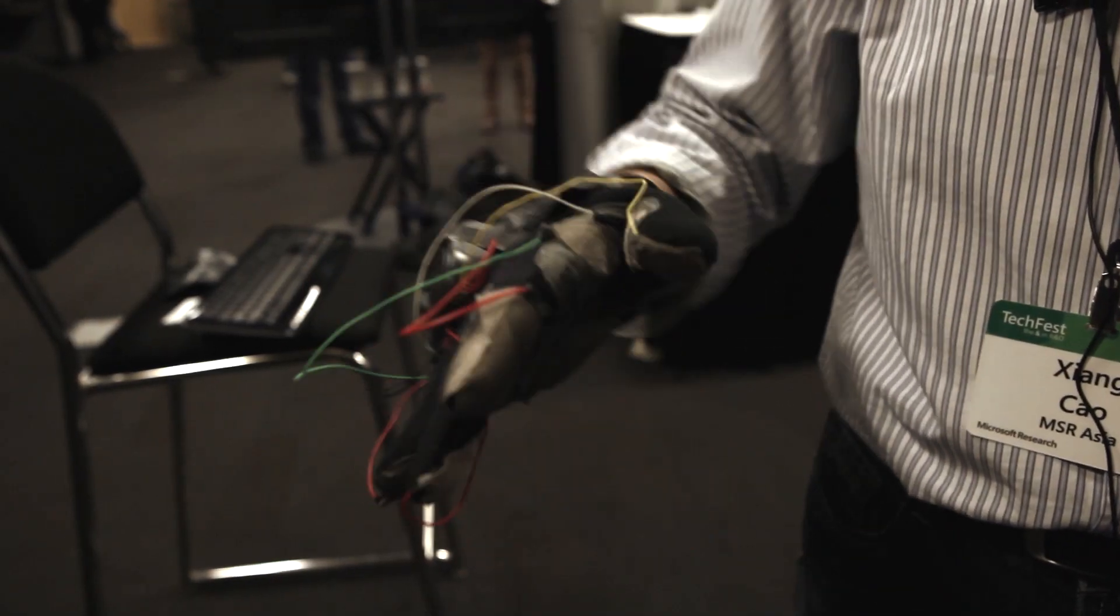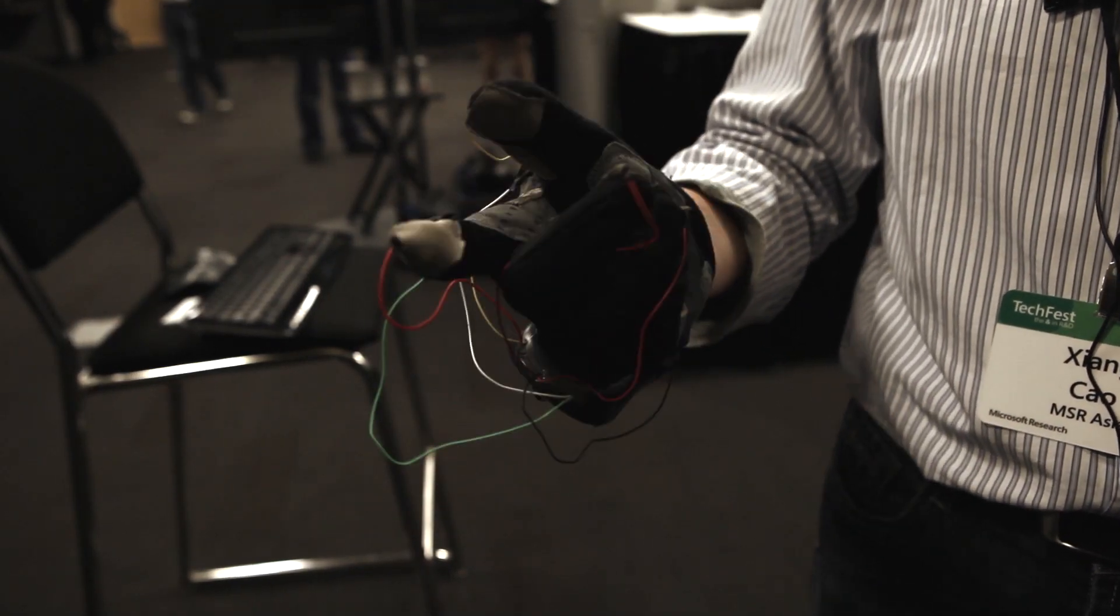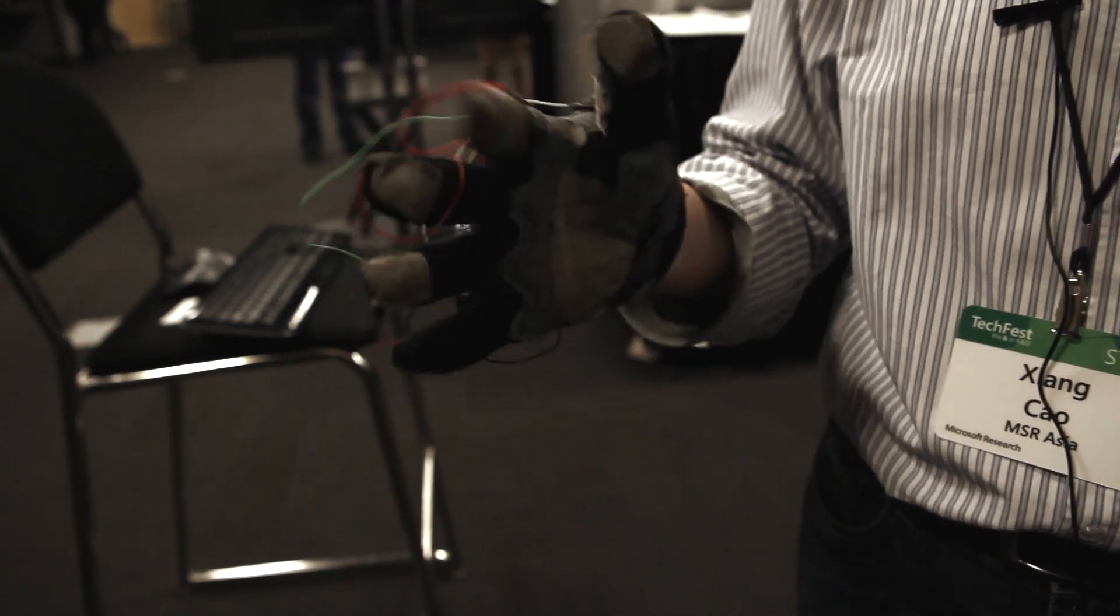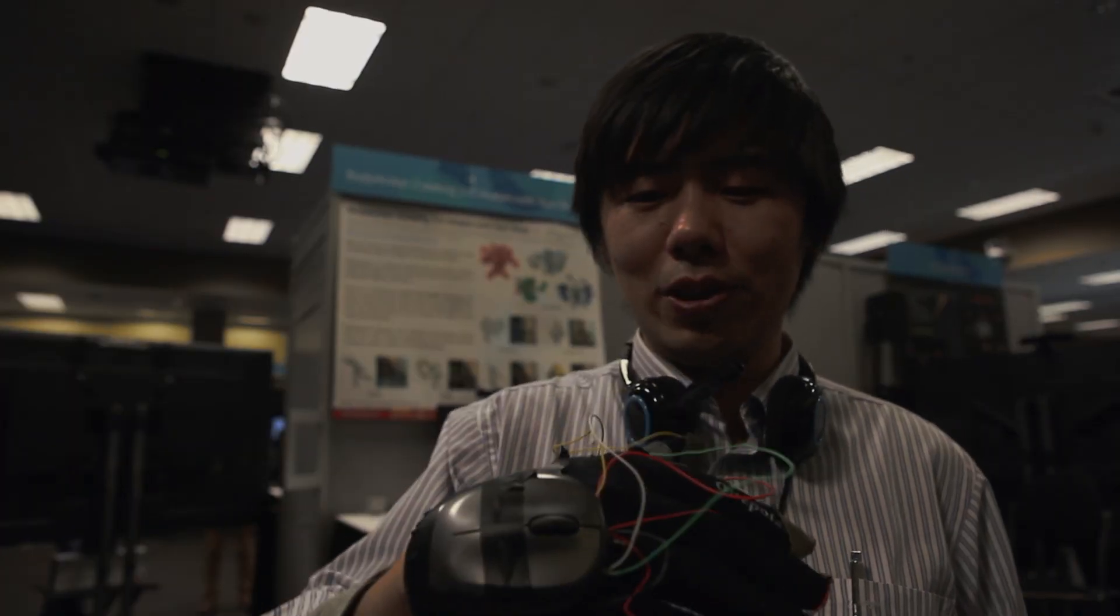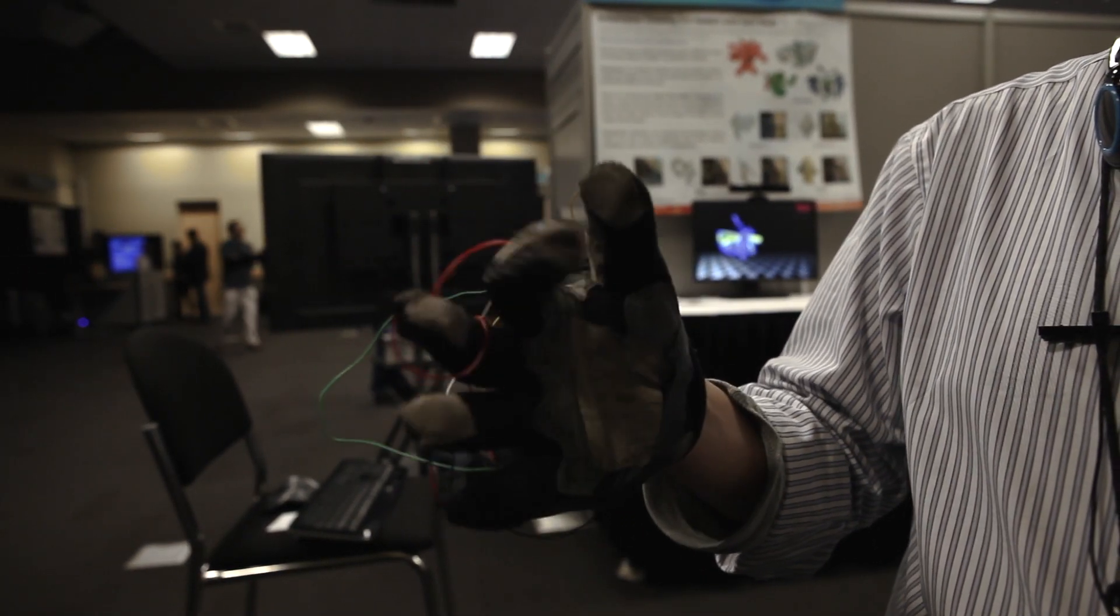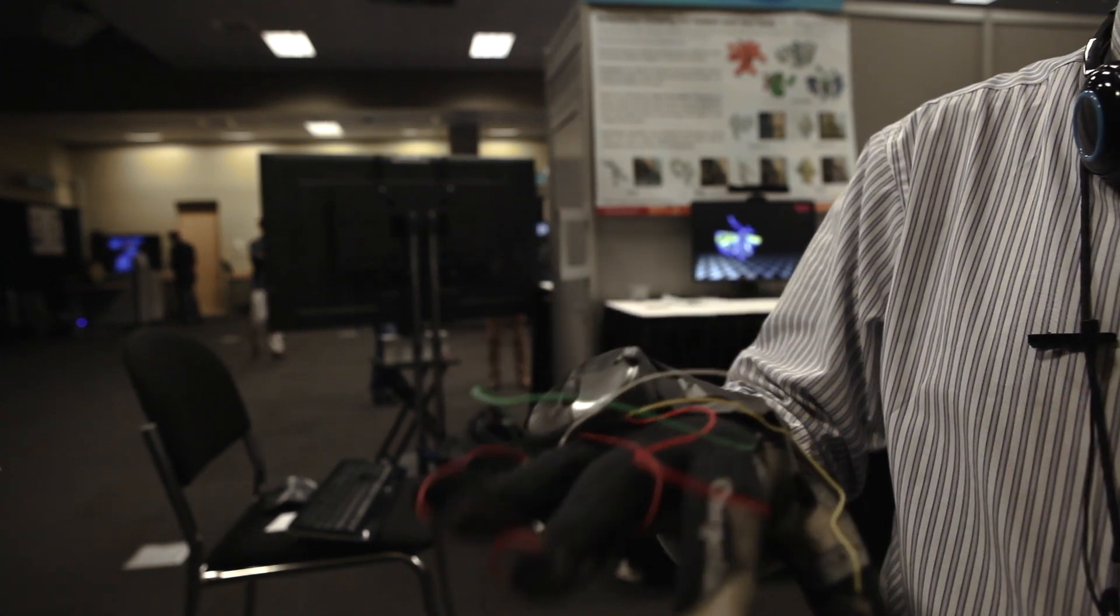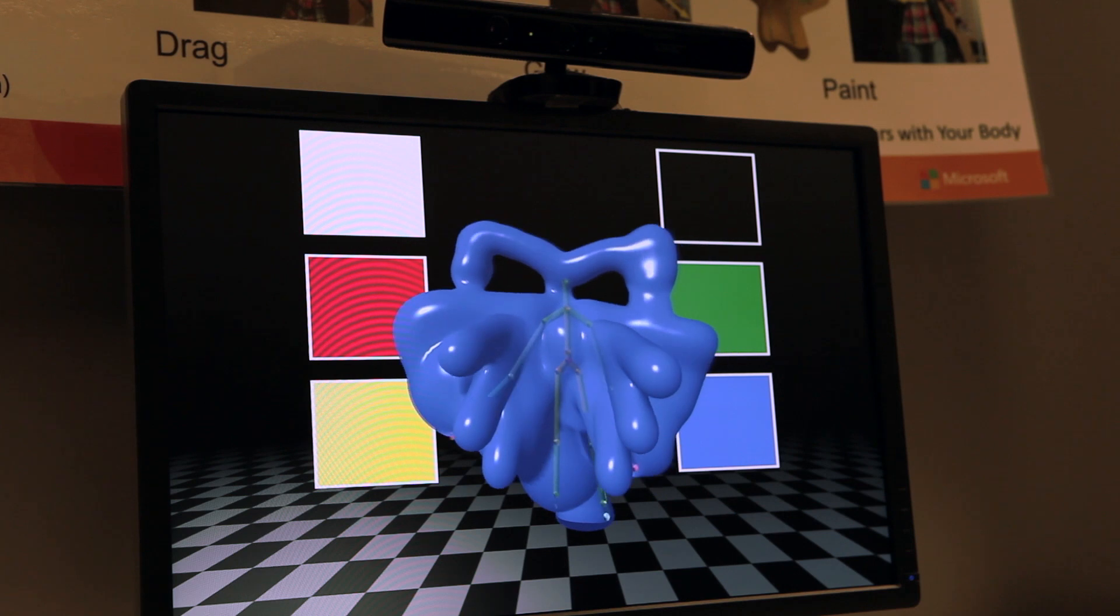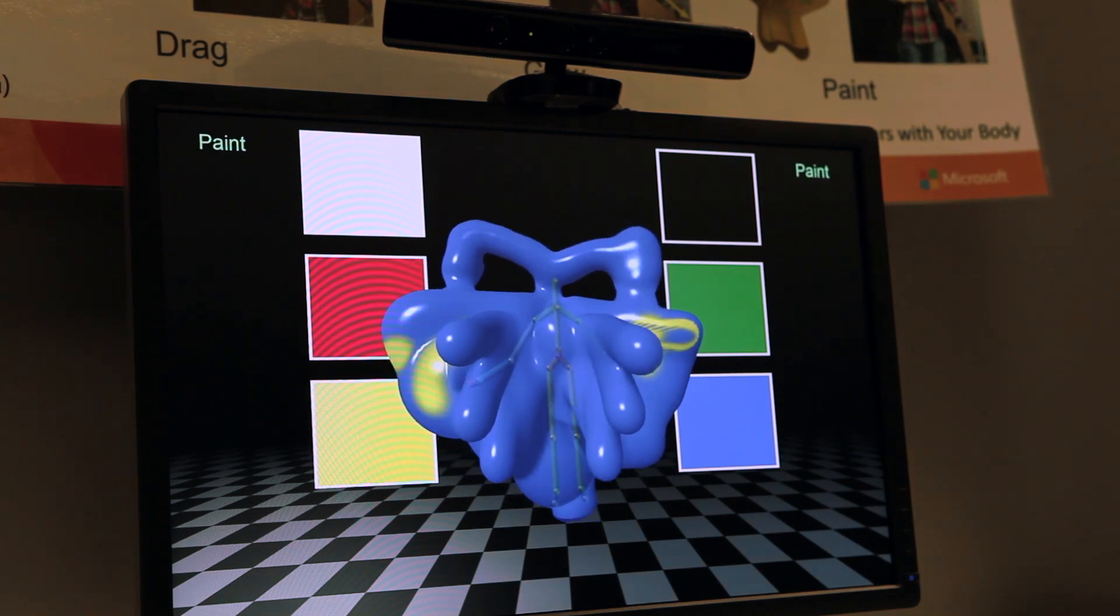I'm wearing this glove, and it's used to detect my different finger gestures used for different operations in the Body Avatar system. For this particular glove, we attach several pieces of conductive cloth on the gloves. As I'm doing certain gestures, these electrodes will touch each other and generate a mouse event, which is sent wirelessly to the PC.